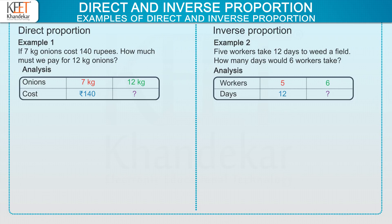Now let us think whether the examples are of direct or inverse proportion. In example 1, we note that the quantity of onions increases from 7 to 12. So what will be its effect on the cost? Naturally, as we buy more quantity, we need to pay more. That is, the cost must also increase. So here, both the values increase. Therefore, we have direct proportion in example 1.